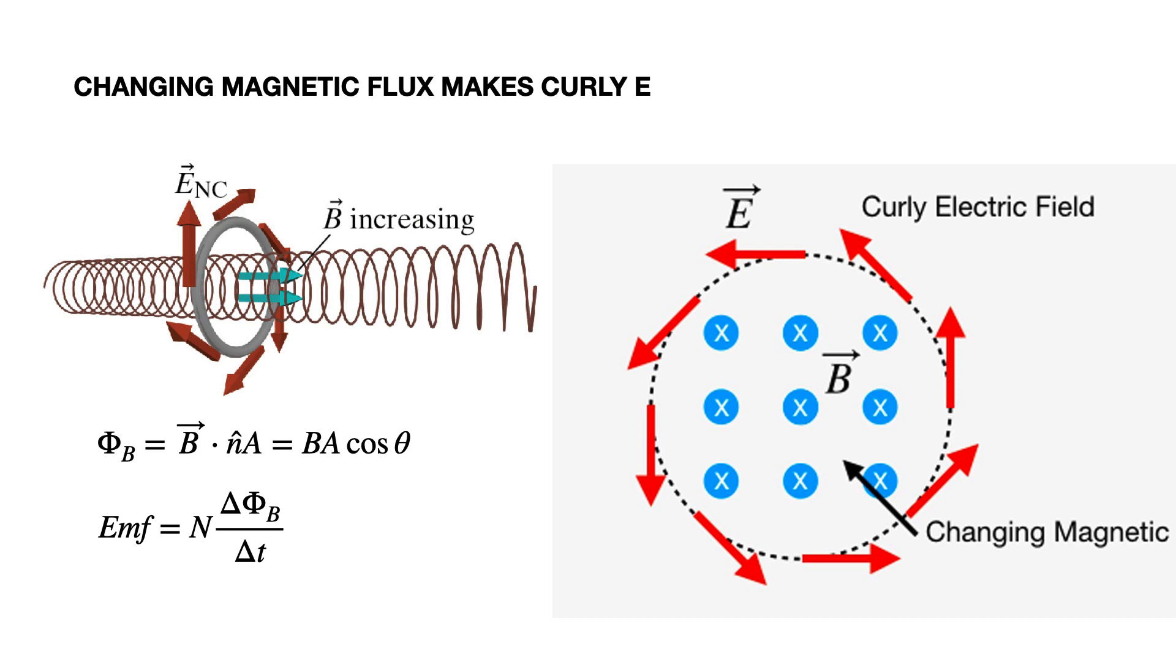Now, what if I have a changing magnetic field? This is Faraday's law, we've already talked about this before. If you have a magnetic field that is changing, that makes a curly electric field. So we can make a curly magnetic field with moving charges, or a changing magnetic field to make a curly electric field.